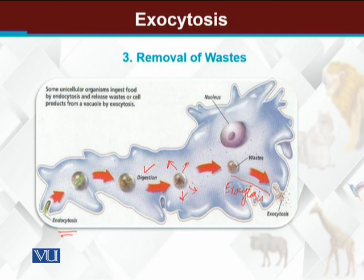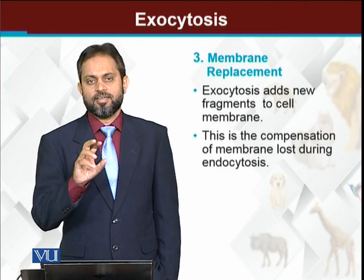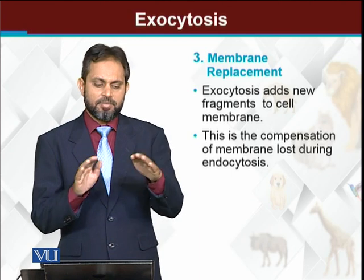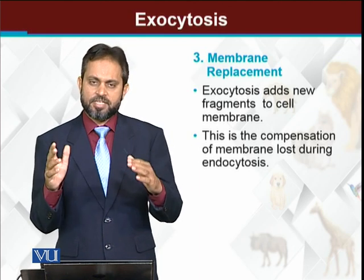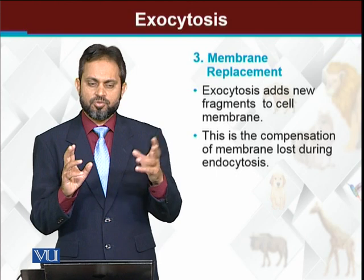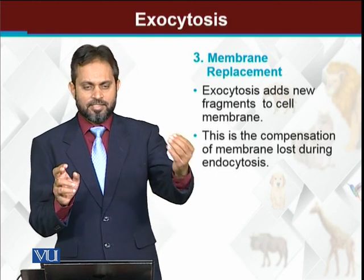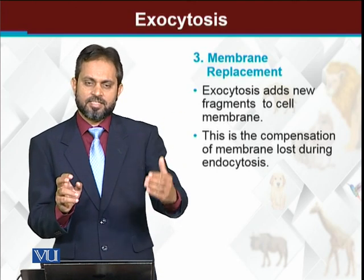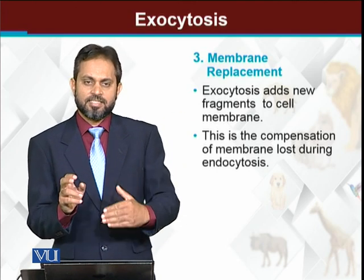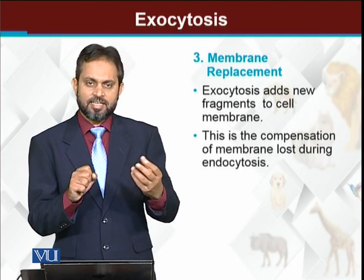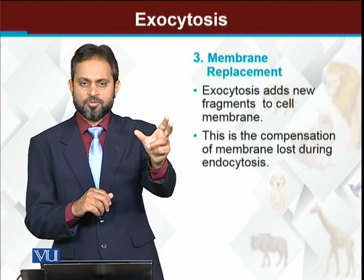Through exocytosis, both useful substances and waste substances are expelled from the cell. An important benefit of exocytosis is its role in cell membrane maintenance. Because during endocytosis, many vesicles are continuously brought into the cell, the result is that the surface area of the cell membrane decreases.